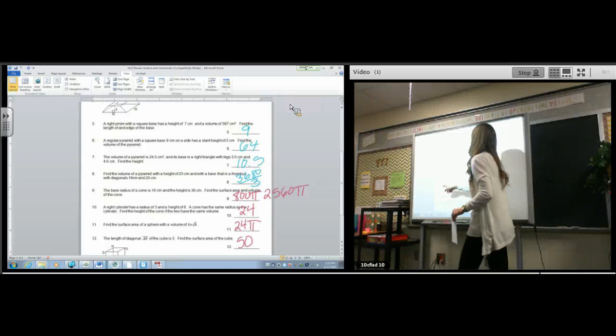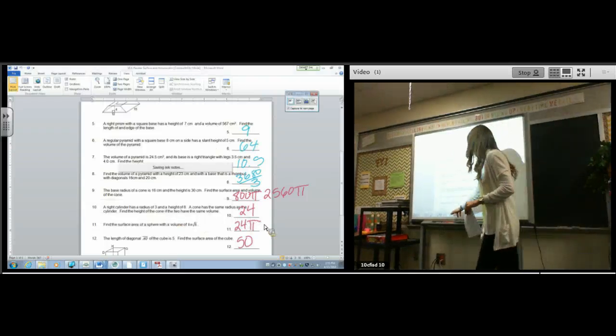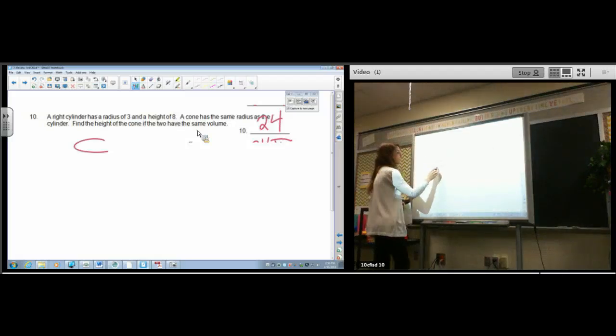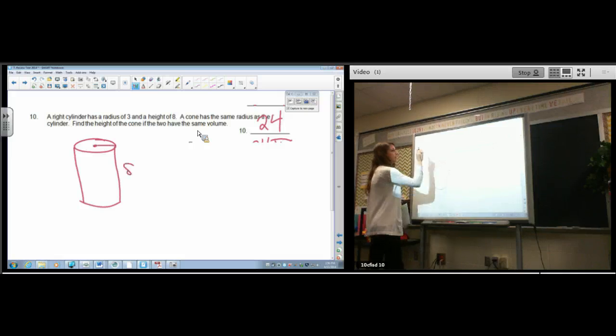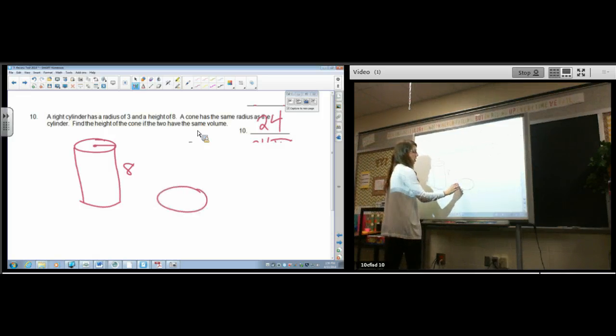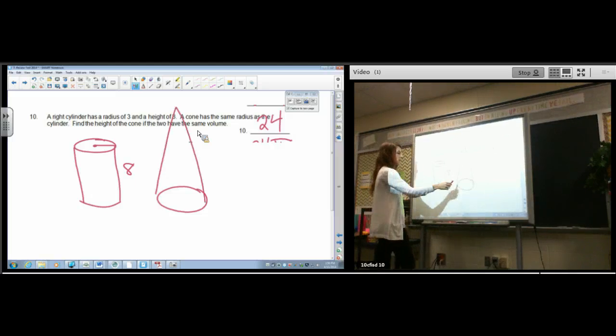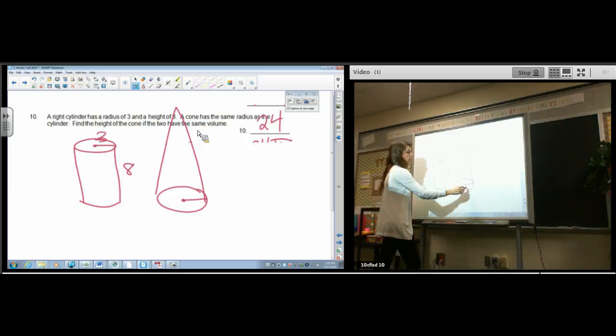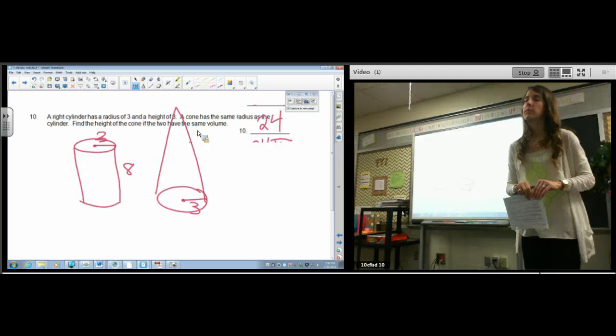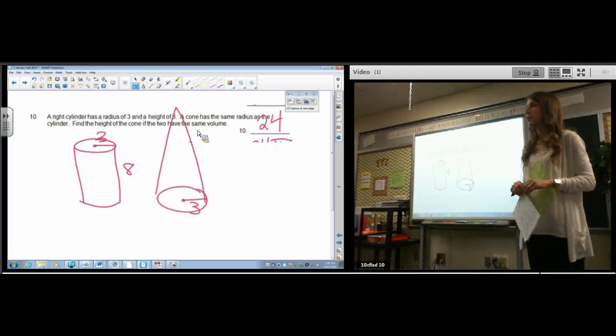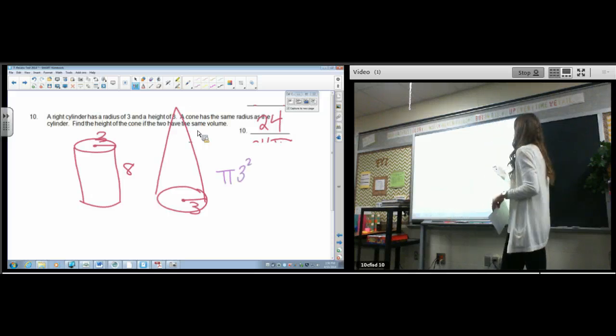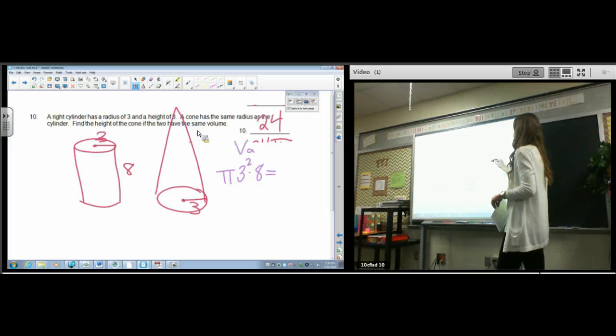Number 10, ready? We don't care that it's right, so we're going to ignore the word right. A right cylinder, it just means it's not the leaning tower of Pisa. A right cylinder has a radius of 3 and a height of 8. A cone has the same radius. Find the height of the cone if they have the same volume. It's probably going to be taller than the cylinder to make up for the fact that it's a cone. What are the radius of 3? 3. So you ready? We're going to find the volume of a cylinder and the volume of a cone. Volume of a cylinder: base times height. The base is a circle. What's the area of a circle? 9 pi. Pi r squared, so 9, I'll take it, 9 pi times the height.